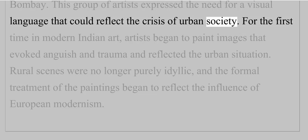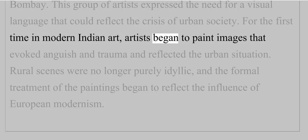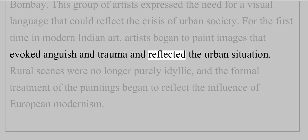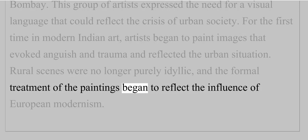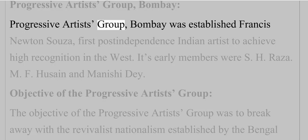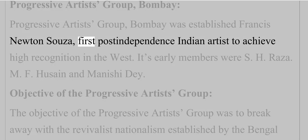For the first time in modern Indian art, artists began to paint images that evoked anguish and trauma and reflected the urban situation. Rural scenes were no longer purely idyllic, and the formal treatment of the paintings began to reflect the influence of European modernism.